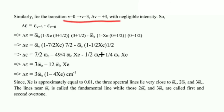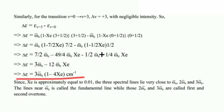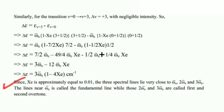Similarly, for the transition v = 0 to v = 3 (ΔV = +3) with negligible intensity, delta epsilon = epsilon(v=3) − epsilon(v=0), which simplifies to delta epsilon = 3 × omega_e_bar × (1 − 4xe) cm⁻¹. Since xe ≈ 0.01, the three spectral lines lie very close to omega_e_bar, 2×omega_e_bar, and 3×omega_e_bar. The line near omega_e_bar is called the fundamental line, while those near 2×omega_e_bar and 3×omega_e_bar are called the first and second overtones, respectively.